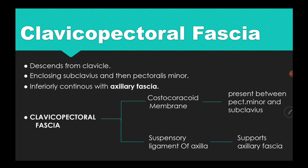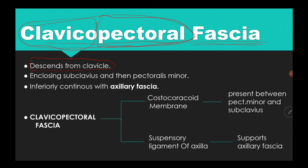The clavipectoral fascia — from the words 'clavicle' and 'pectoral' — descends from the clavicle, enclosing the subclavius and pectoralis minor, and on the inferior side it continues with the axillary fascia.